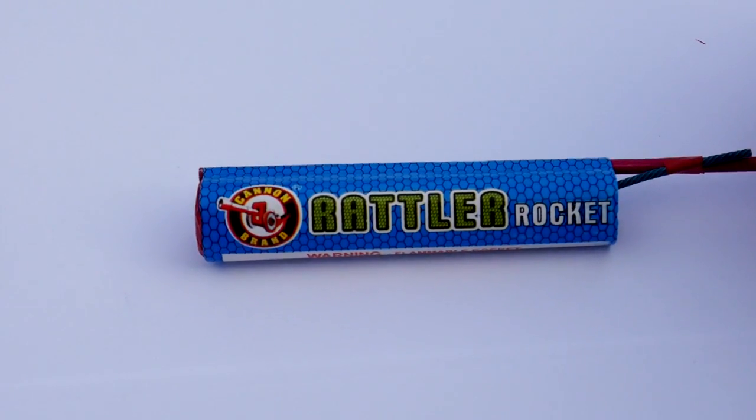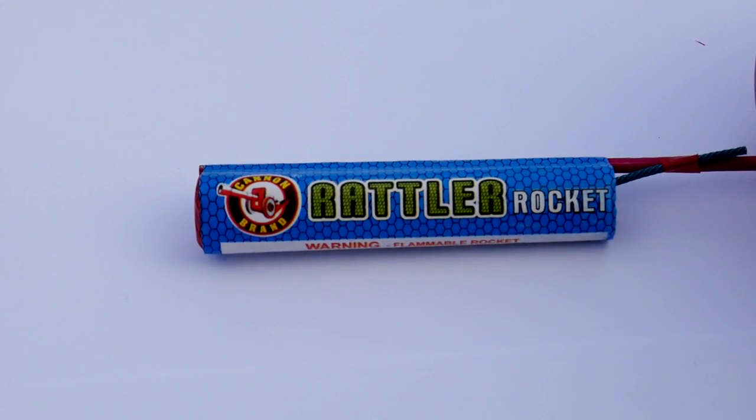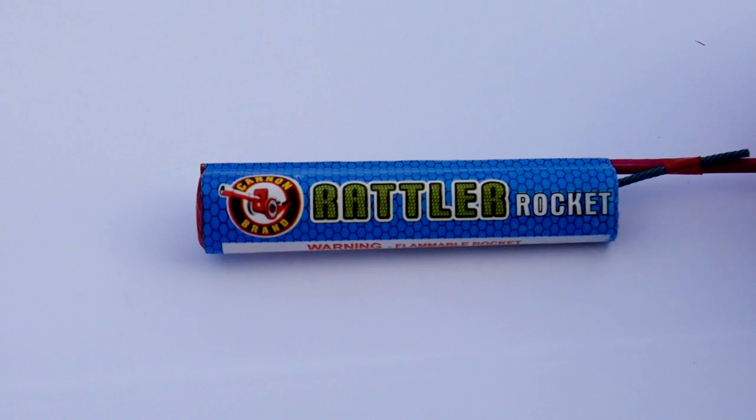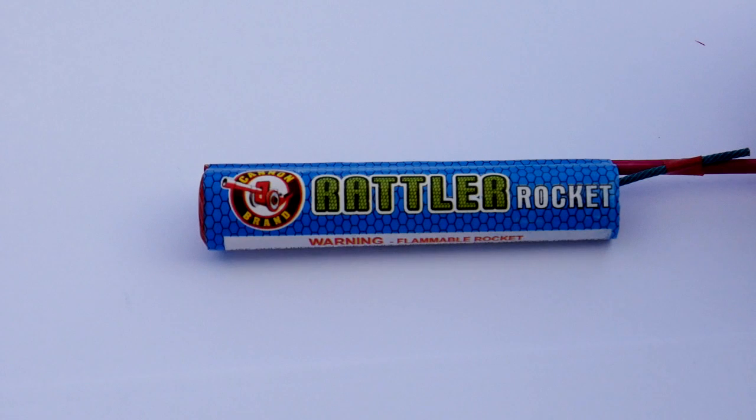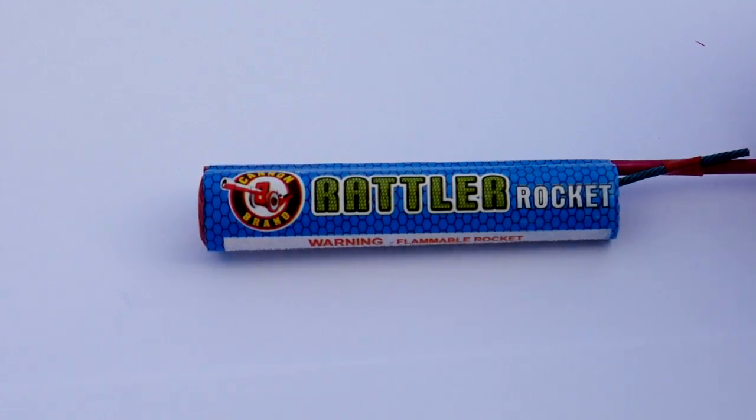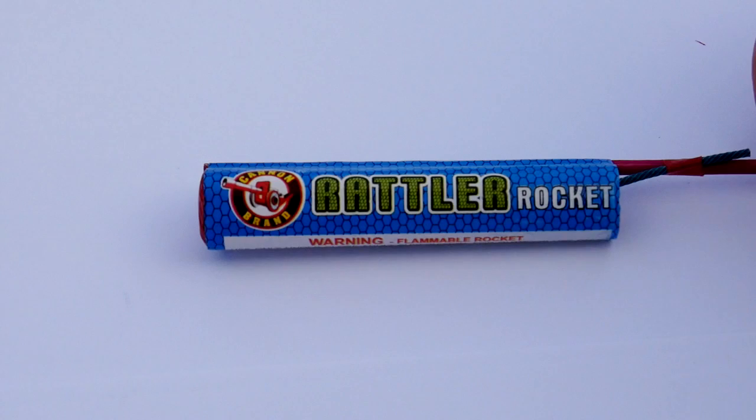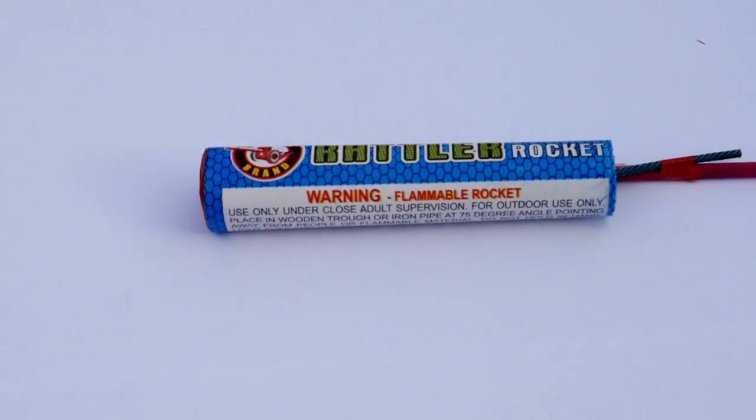So what we've got here is a good old Rattler rocket. Basically what this does is just make an awful screaming sound when you light it and try and work out why it is. And then after it does this good old screaming effect and launches off in the air, it does a few crackles. So we'll see if we can figure out which bit's which.